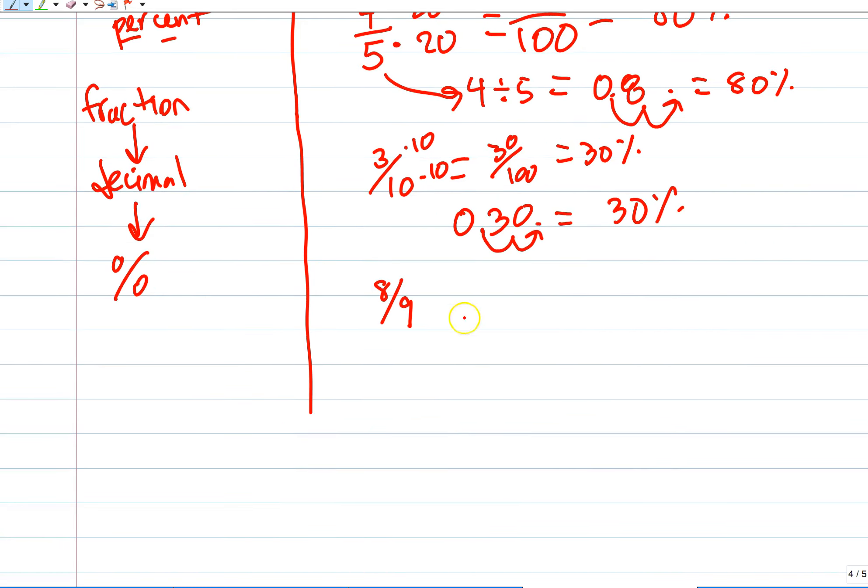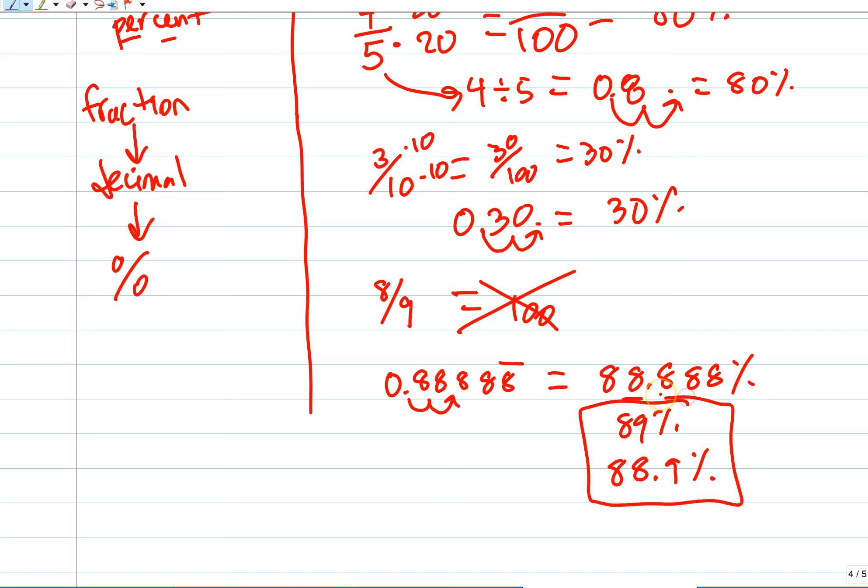Eight ninths, I can't make that over a hundred. Nine times what is a hundred? It ain't pretty. It's not going to be helpful. So this method doesn't always work, which is why I told you. Use the technology. What is eight divided by nine? Forever. And what we'll generally do is we'll take it either to the nearest percent. So this is eighty eight point eight eight eight percent, which we would round up to eighty nine percent. Or we might do it to the tenths of a percent, which would be eighty eight point nine percent. A couple options depending on what they tell you to round it to. But notice in both of these situations, I wasn't able to make it over a hundred. So that's why as a general rule, if I'm given a fraction, I turn it to a decimal and then turn that to a percent.